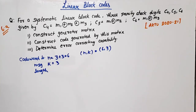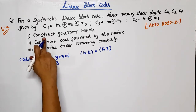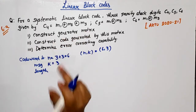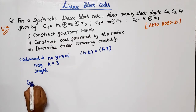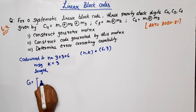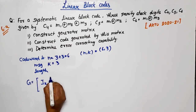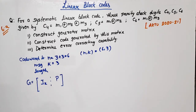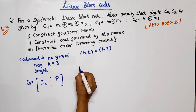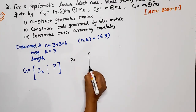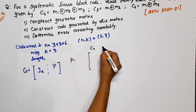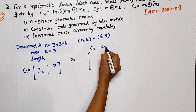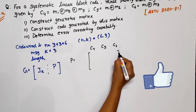Now the first question is to construct the generator matrix. The generator matrix G is equal to the identity matrix I_k concatenated with the parity matrix P. So first we need to find out the parity matrix P, which is derived from the check bits C4, C5, C6.